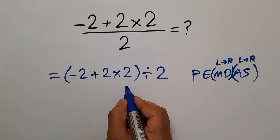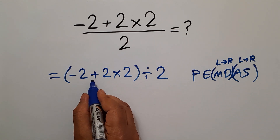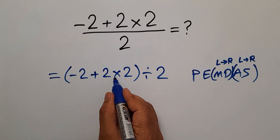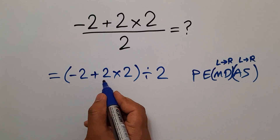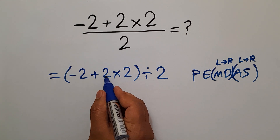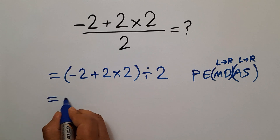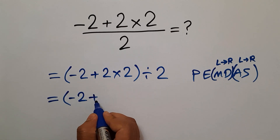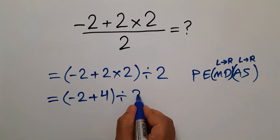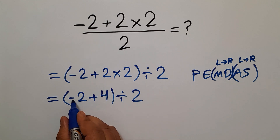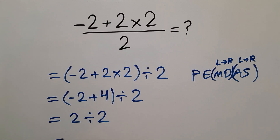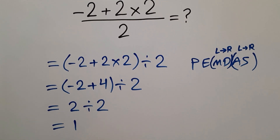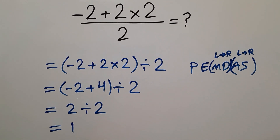Here we have these parentheses, and inside these parentheses we have one addition and one multiplication. According to PEMDAS, multiplication has higher priority than addition. So first, 2 times 2, which equals 4. So we have parentheses negative 2 plus 4, divided by 2. And negative 2 plus 4 equals 2. So 2 divided by 2, which equals 1. Therefore, our final answer to this problem is just 1.